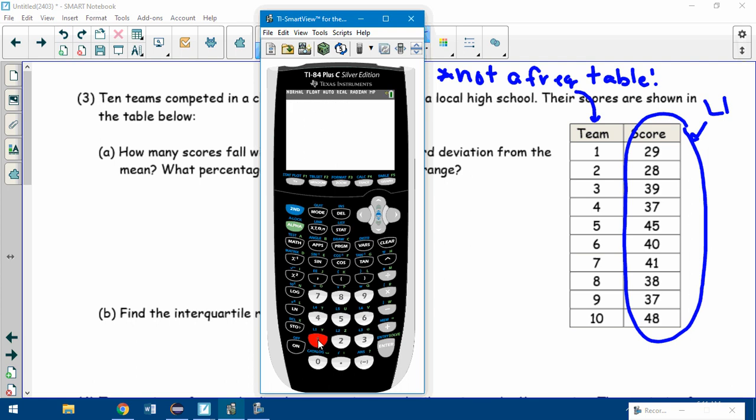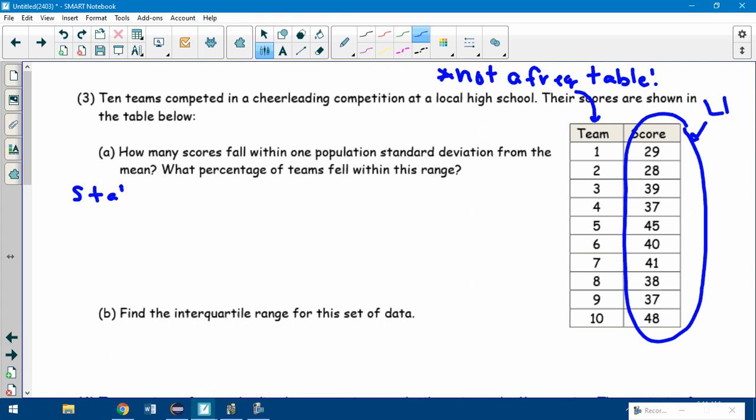Don't do L1 and L2. All we're going to do is we want the average and standard deviation of all these team scores. So all of these are just going to go in L1. If I go to stat edit, I'm going to clear out stuff from the warmup and just put in all these team scores. So we've got 29, 28, 39, 37, 45, 40, 41, 38, 37, and 48. Then we're going to go to stat calc, one variable stats.